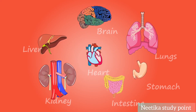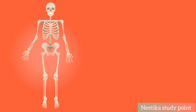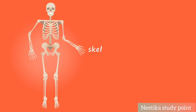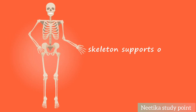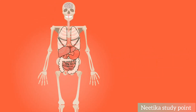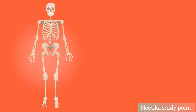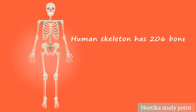Brain, lungs, stomach, intestine, heart, kidney, liver — skeleton protects our body organs. The human skeleton has 206 bones.